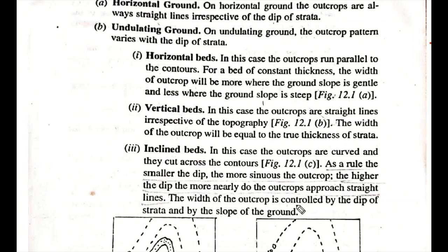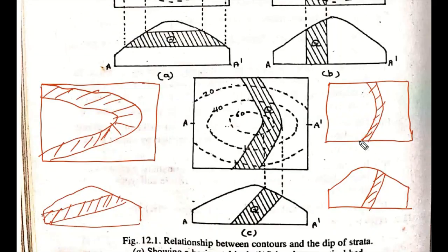The third case is the inclined bed. In this case, the outcrops are curved and they cut across the contours. As a rule, the smaller the dip, the more sinuous the outcrop. The higher the dip, the more nearly the outcrop approaches a straight line. The width of the outcrop is controlled by the dip of the strata and by the slope of the ground.